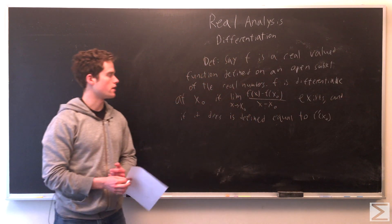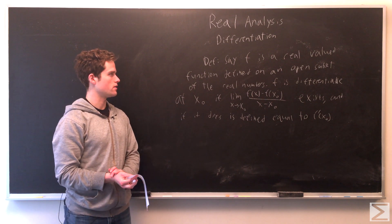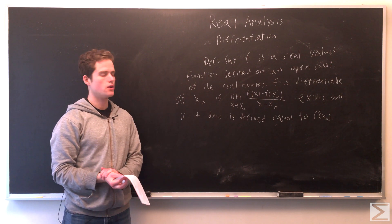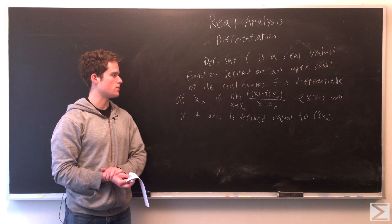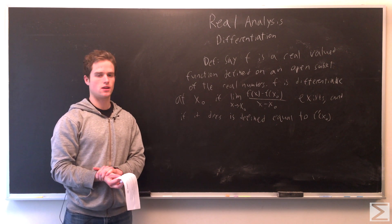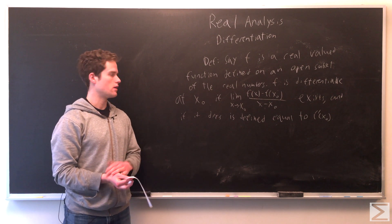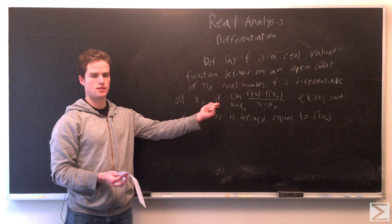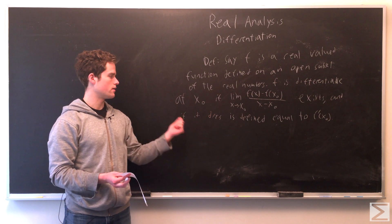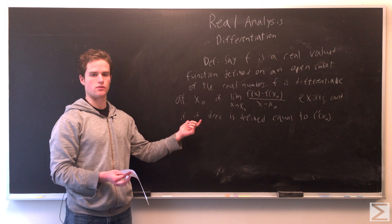Given a function f, which is a real-valued function defined on an open subset of the real numbers, we say f is differentiable if the fraction f(x) minus f(x₀) over x minus x₀ — the limit of that as x approaches x₀ in whatever sequence — if that limit exists, then it is defined to be equal to the derivative f prime of x₀.